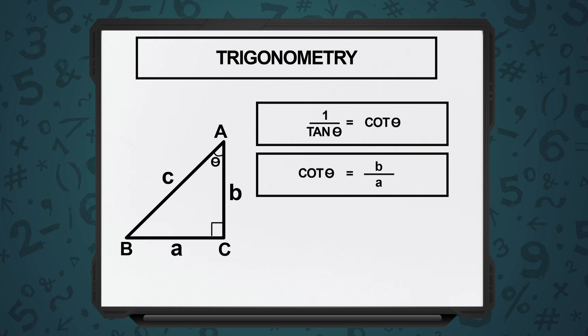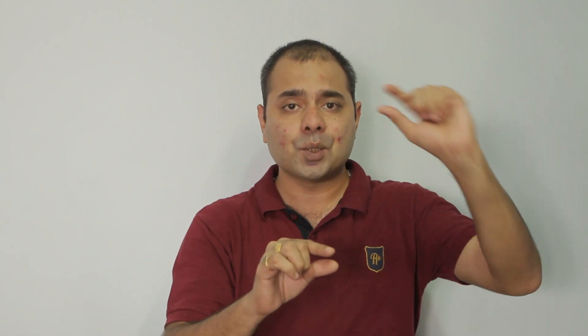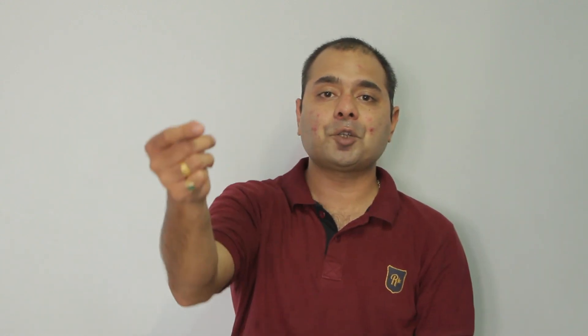The 'CO' over here stands for co. So: sine, cosine, tan, cosecant, secant, cotangent — these are the six basic ratios you need to know. You basically just need to know sine, cosine, and tan, which equals sine upon cos. The rest are all reciprocals. What is sine becomes cosec on the other side, and what is cos becomes sec on the other side.